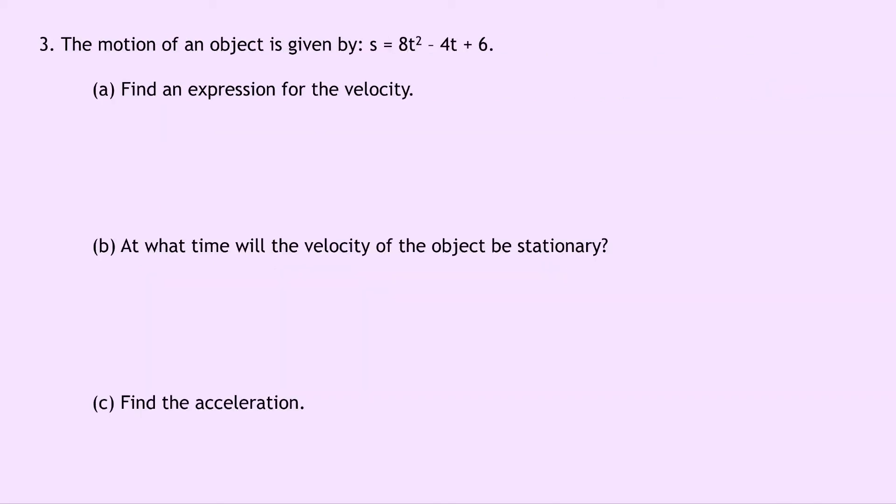Lastly question 3 says the motion of an object is given by s equals 8t squared minus 4t plus 6. Part a says to find an expression for the velocity. So writing down our expression for s first of all we have s equals 8t squared minus 4t plus 6 and remember to get the velocity we need to differentiate s with respect to time so we get v equals ds by dt which equals 16t minus 4.